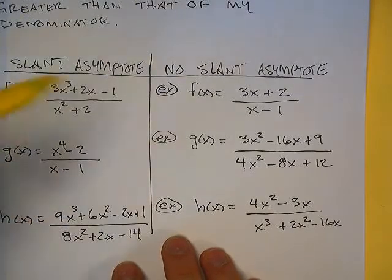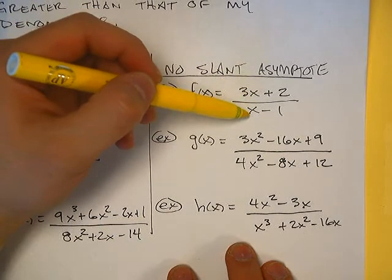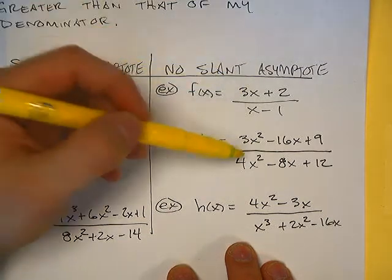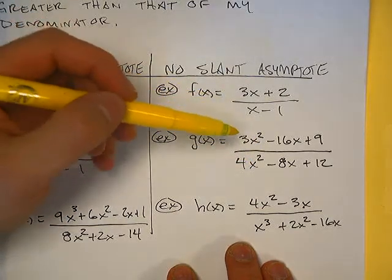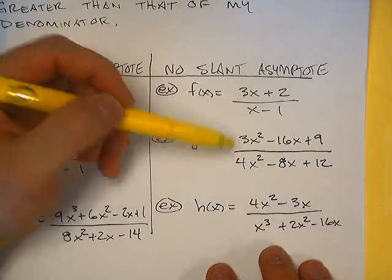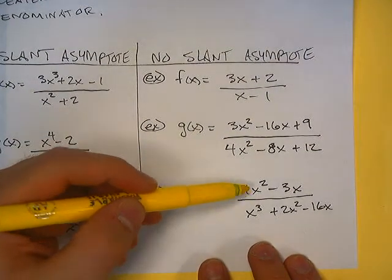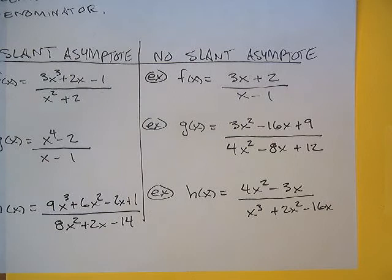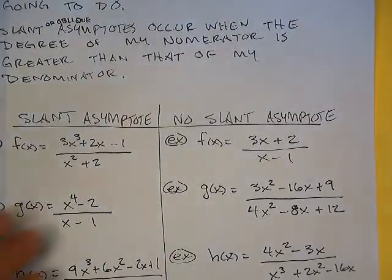When we don't have slant asymptotes, we have horizontal asymptotes at some value. Since the degree is the same on the top as it is on the bottom, our horizontal asymptote is going to be at 3. And over here the degree is also the same on top and bottom, so my horizontal asymptote is going to be at y equals 3/4 — a perfectly horizontal line. And the last one, where the degree in the numerator is less than the degree in the denominator, gives a horizontal asymptote at y equals 0.